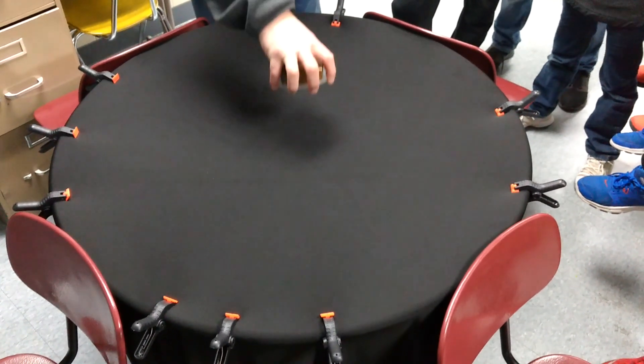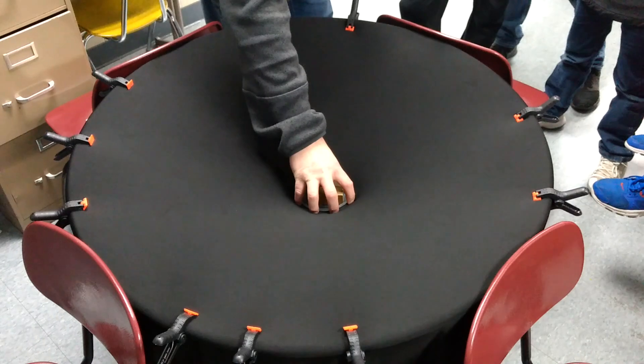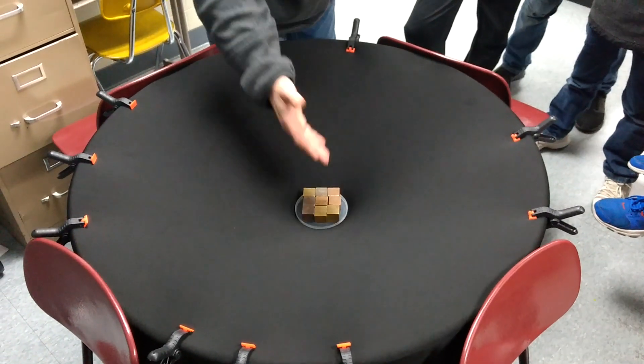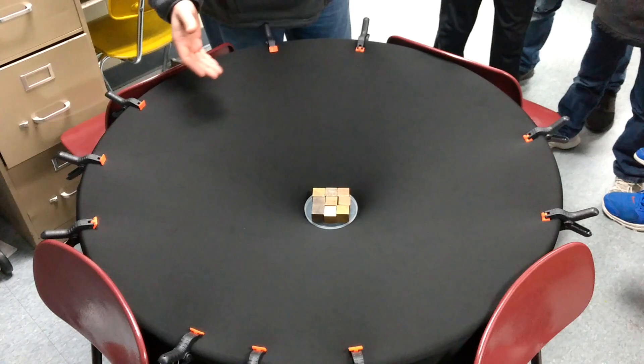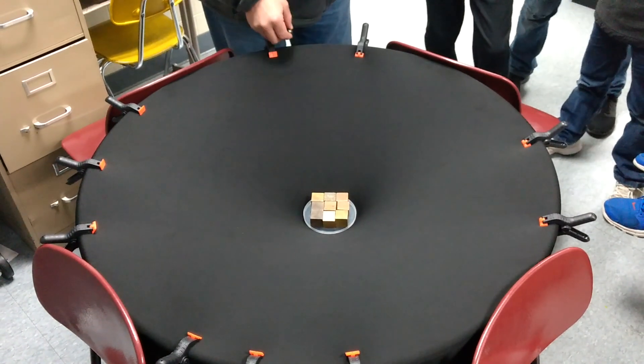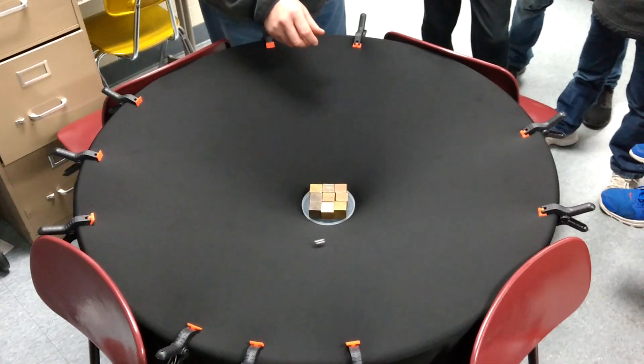But when we add something that has gravity like a planet or let's say a star, I'm going to add something that has a great mass. Notice how it warps space-time, and the same things that I pushed across that went straight now curve.